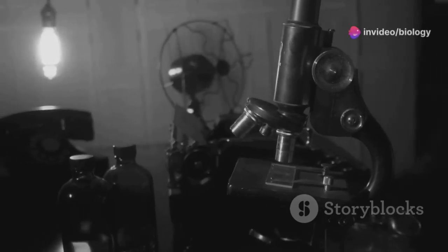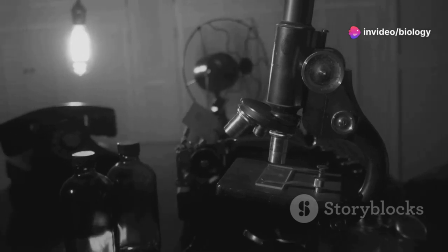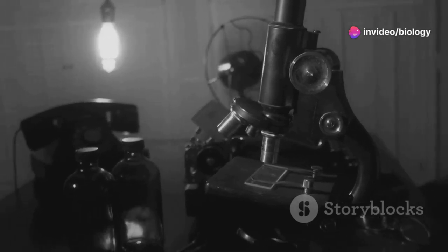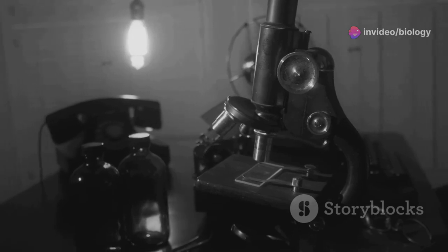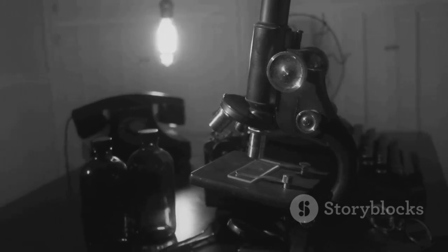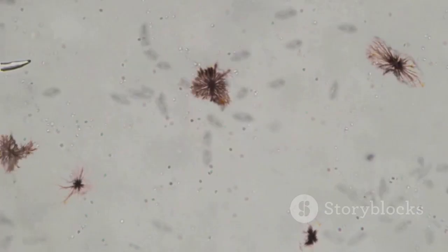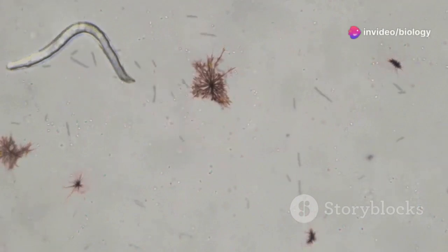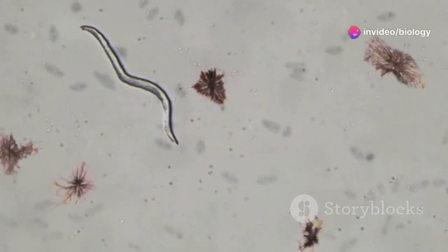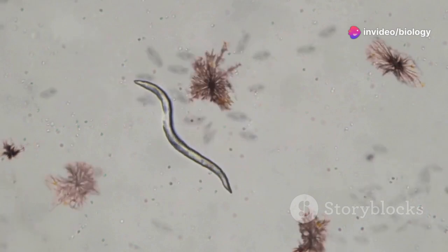Back in the 1600s, a curious dude named Robert Hooke was peering through a microscope at a slice of cork. This was no ordinary glance; it was a groundbreaking moment in the history of science. To his surprise, he saw a bunch of tiny compartments that reminded him of the little rooms monks lived in.